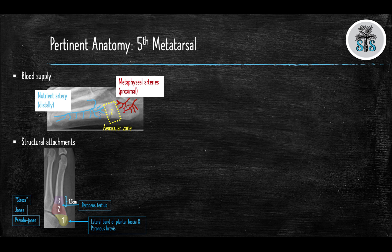There are three structures that attach to the 5th metatarsal. At the proximal tubercle, the lateral band of the plantar fascia and the peroneal brevis attach. The peroneal tertius attaches at the junction of zone 2 and zone 3.